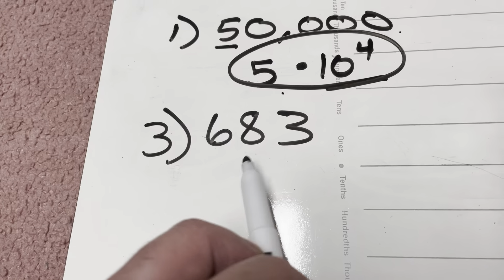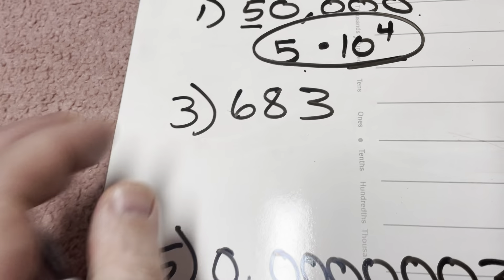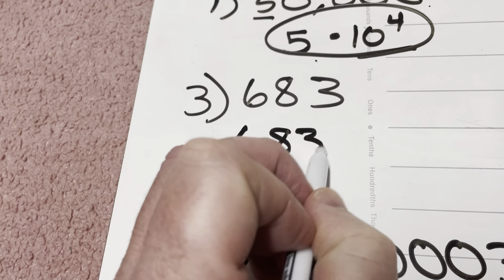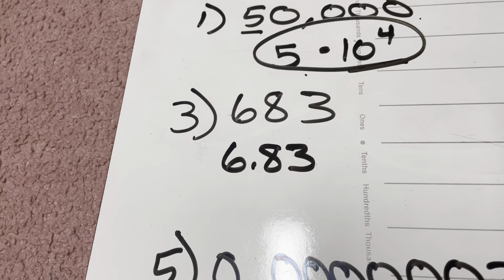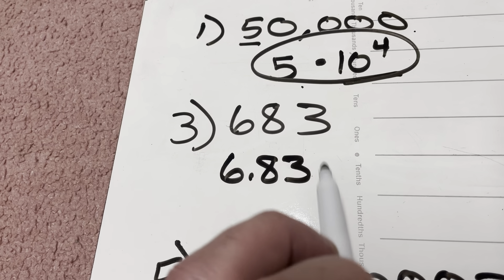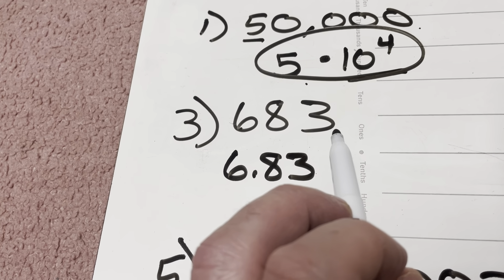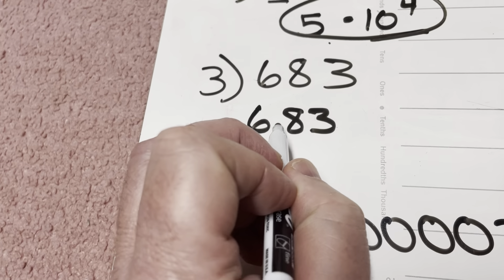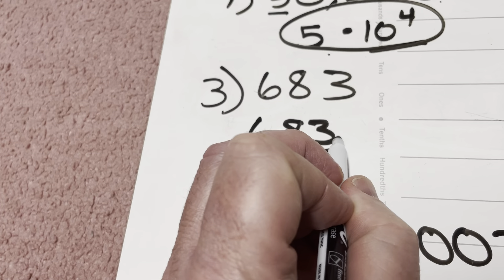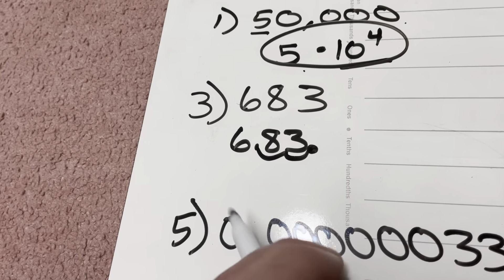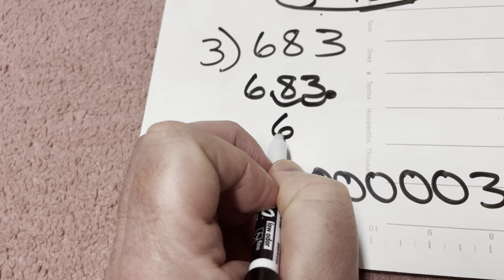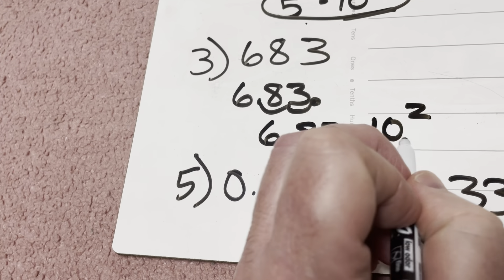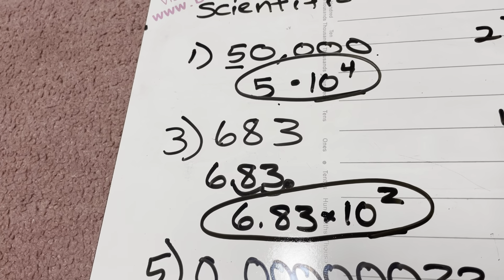683. They're all digits here, so what I'm going to have to do to get it at least 1 but less than 10 — it's going to have to be 6.83. How many times am I going to have to move the decimal to get it to be 683? I'm going to have to move it once, twice, to get it to be 683. So this would end up being 6.83 times 10 to the power of 2. Final answer.